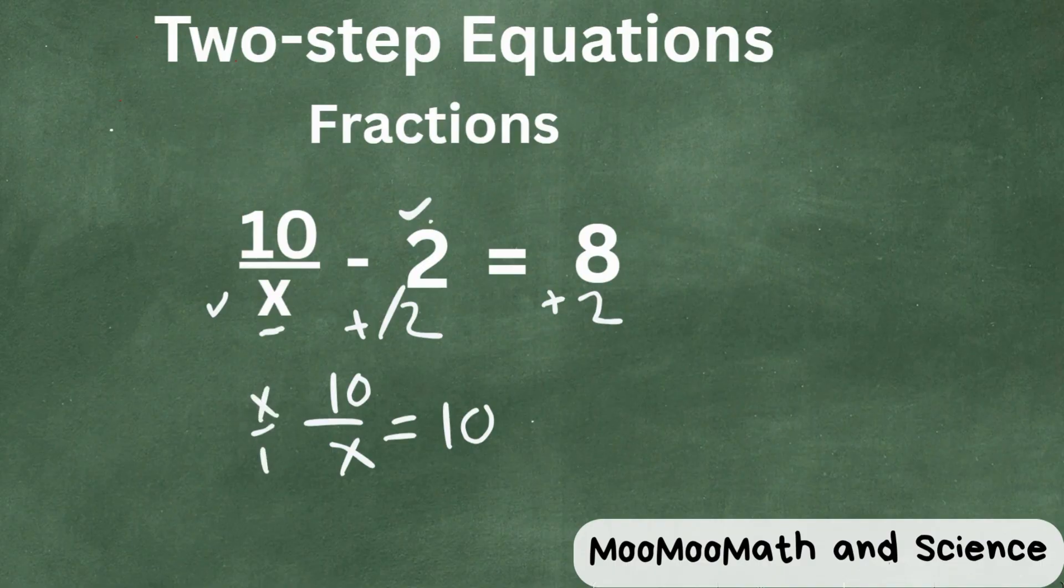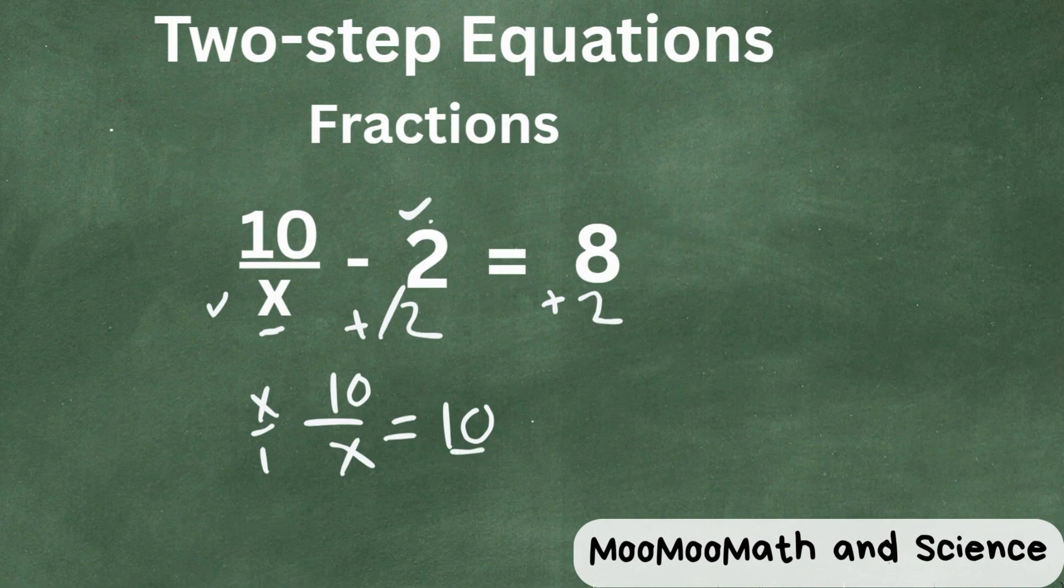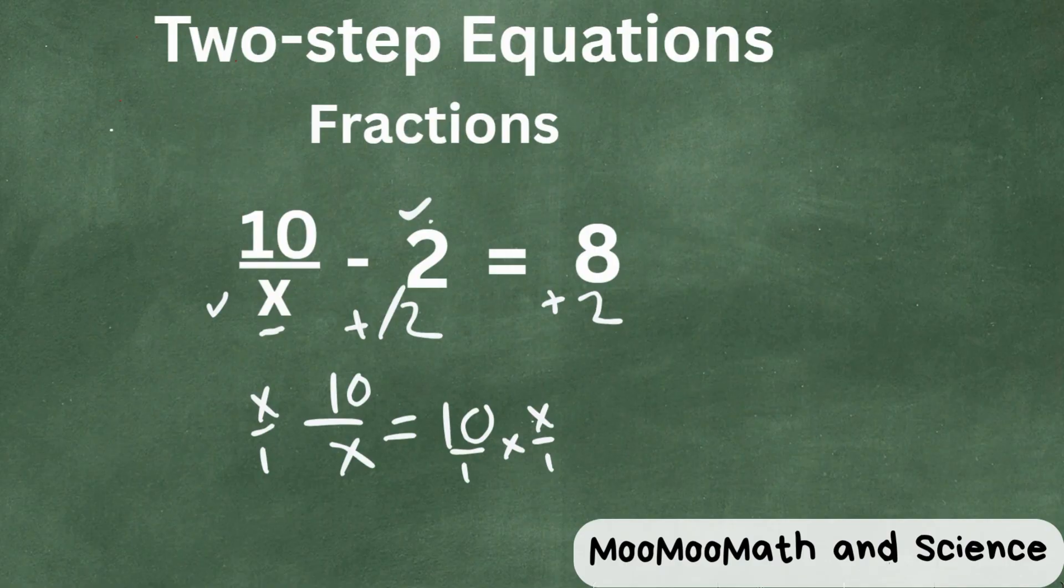And we will do the same here. Let's go ahead and write 10 over 1 so we can kind of see that we're multiplying this fraction. When we do this, notice that the x's cancel and we have a 10. And then 10 times x is 10x.